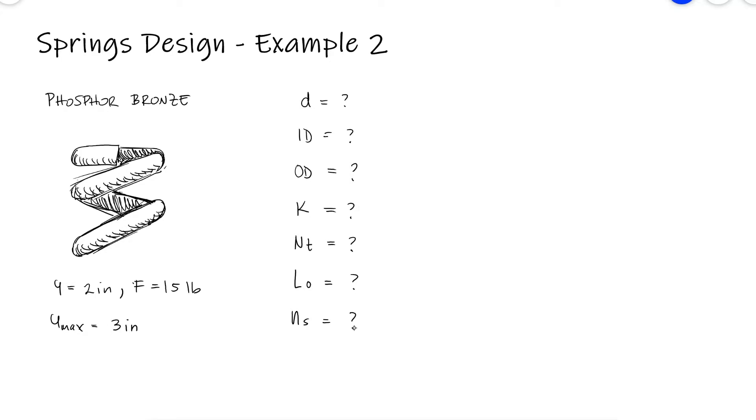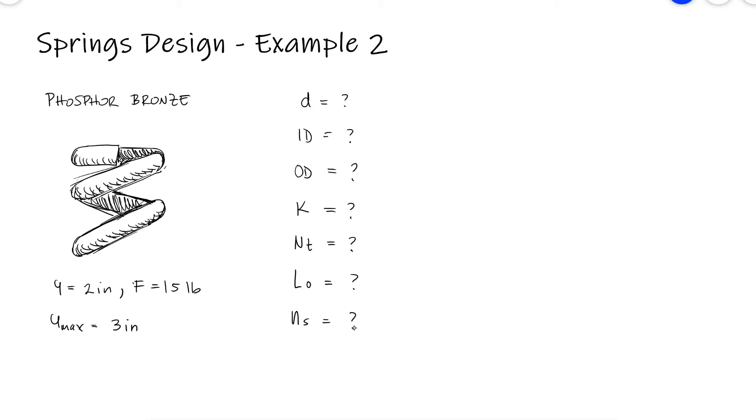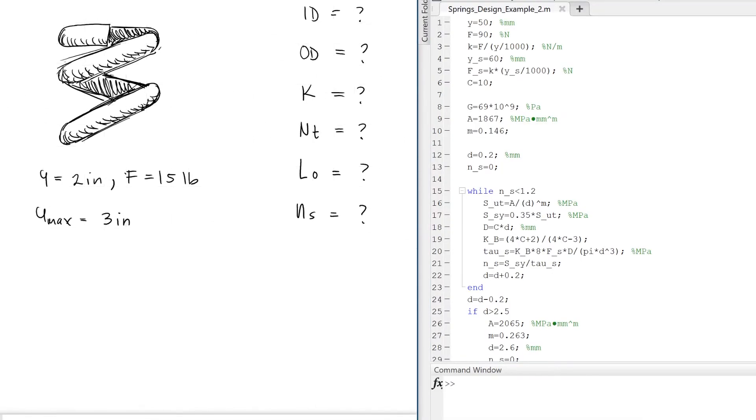Notice that the process is very similar to the one we carried out for example 1. Even though the spring index C was not defined by the problem, the value of 10 can still be used since it lies between the general restrictions of 4 and 12.